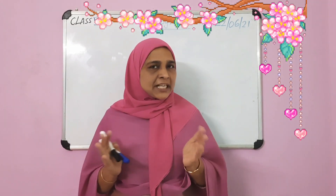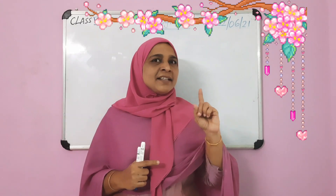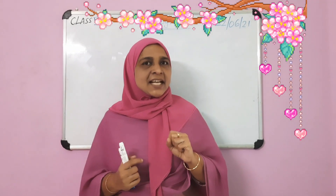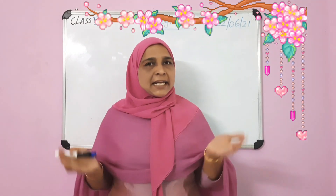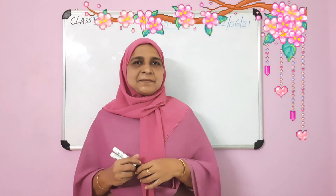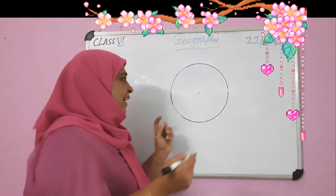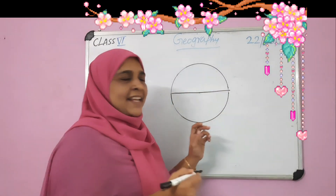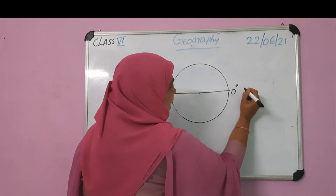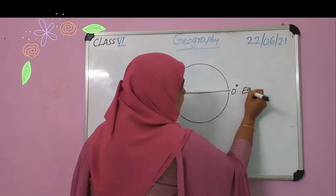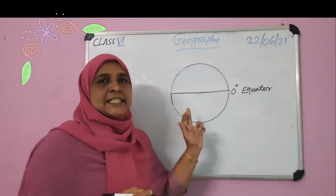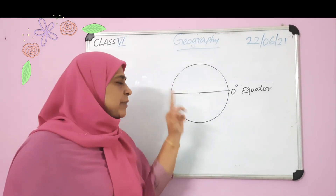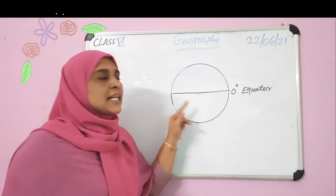Just a recap. The important latitudes are: equator, Tropic of Cancer, Tropic of Capricorn, Arctic Circle and Antarctic Circle. This is zero degree latitude, also known as equator. Equator divides the earth into two equal halves — first one, northern hemisphere, and second one, southern hemisphere.